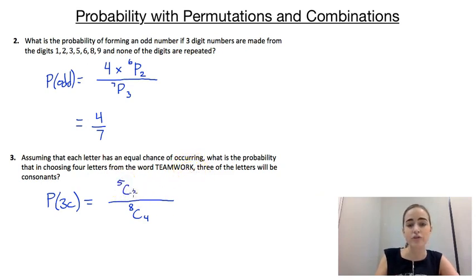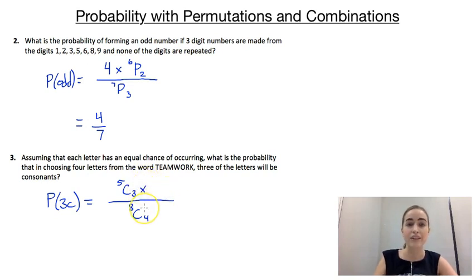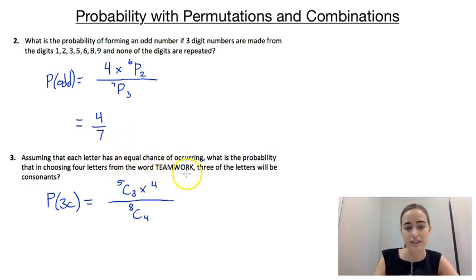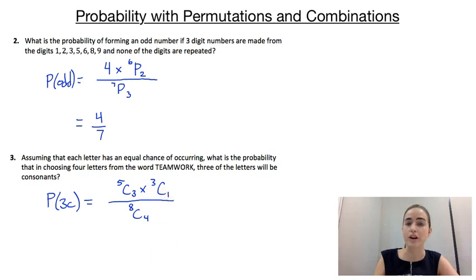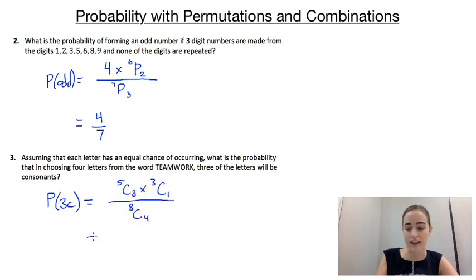We've got five consonants and we're going to choose three of them. But if three are consonants, that also means the other one letter has to be a vowel. Counting the vowels in teamwork: there are actually three vowels, and we're going to choose one of them — 3C1. So the favourable outcomes are 5C3 times 3C1, divided by 8C4 total combinations, and that simplifies to three over seven.